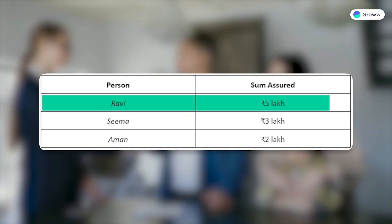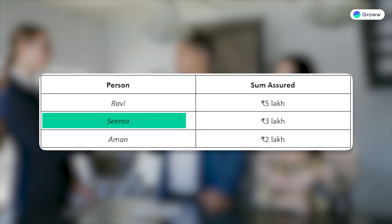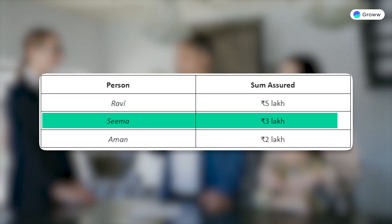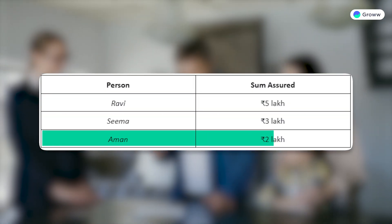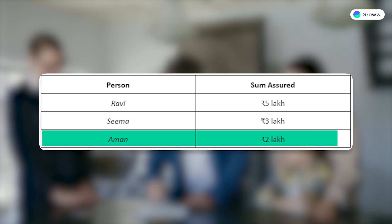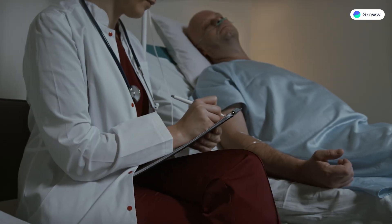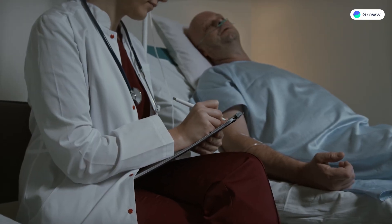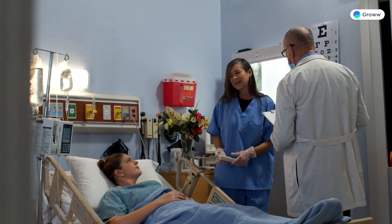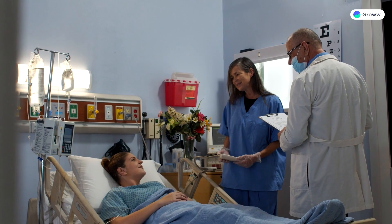For example, if you buy a 5 lakh cover for yourself and a 3 lakh cover for your wife — if you are admitted to hospital, you will get coverage of 5 lakhs. But if your wife is admitted to hospital, she will get coverage of 3 lakhs.